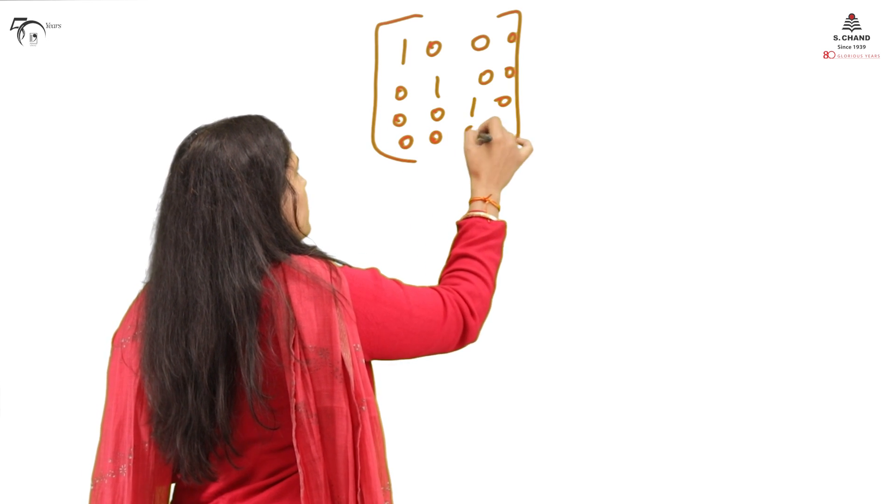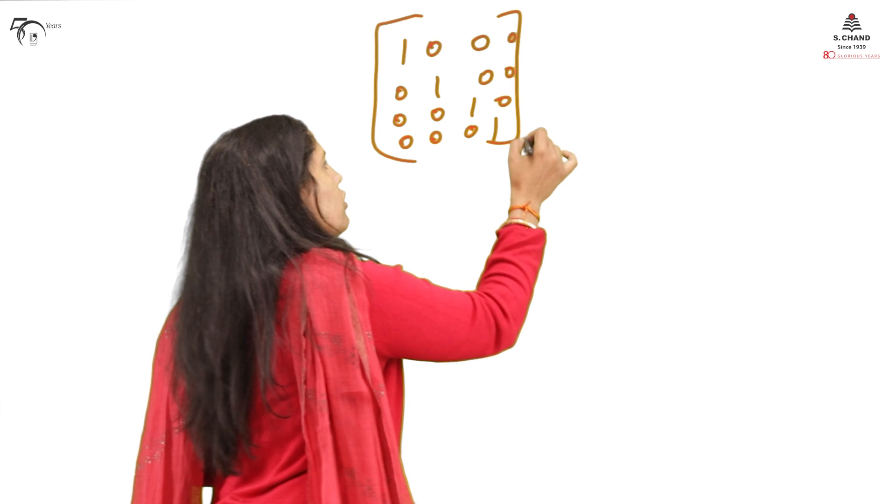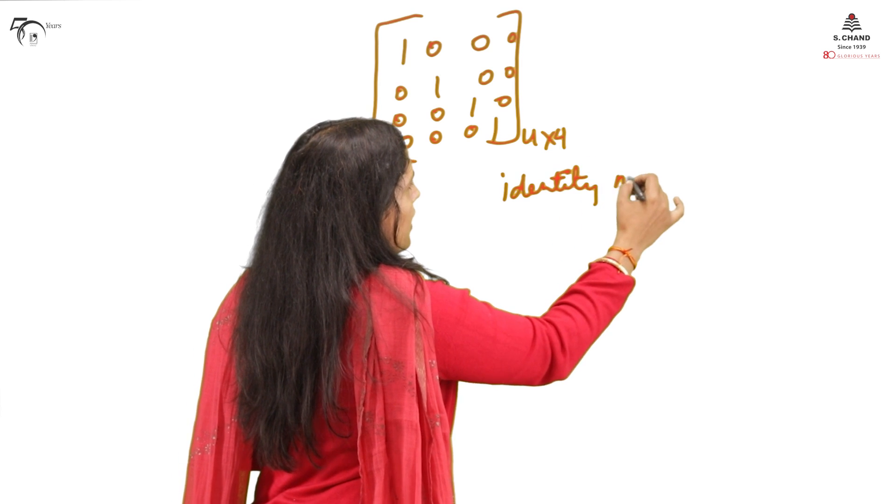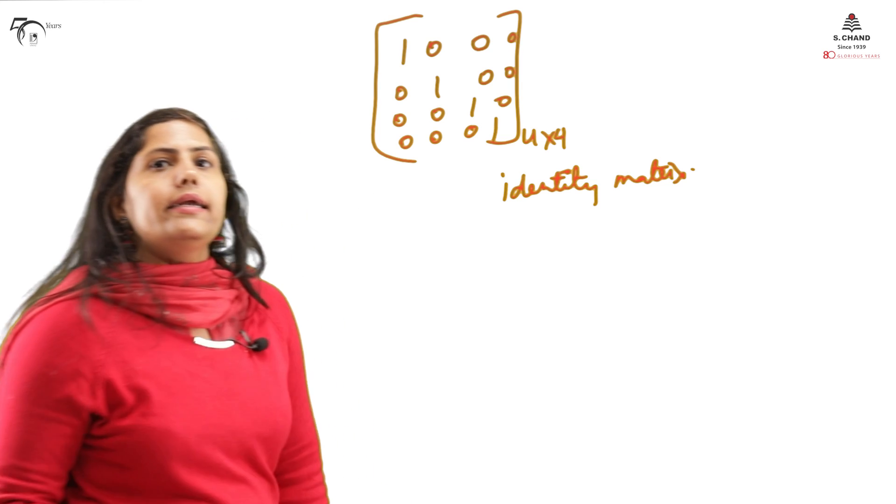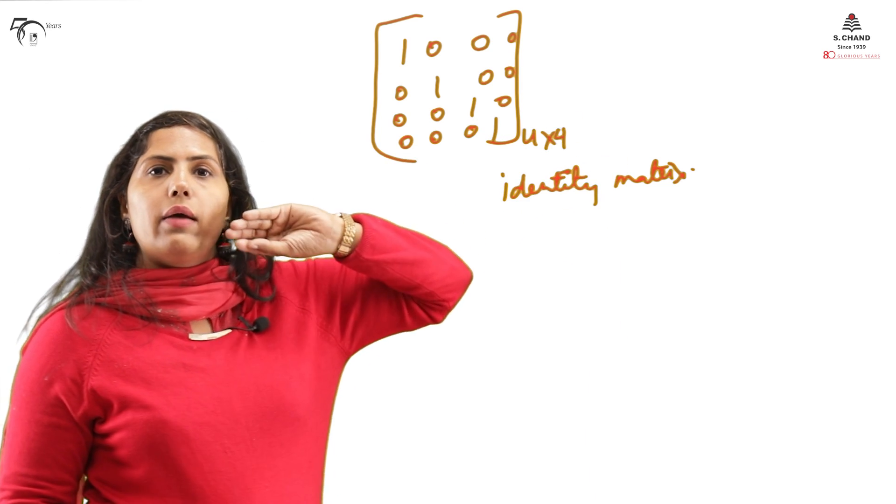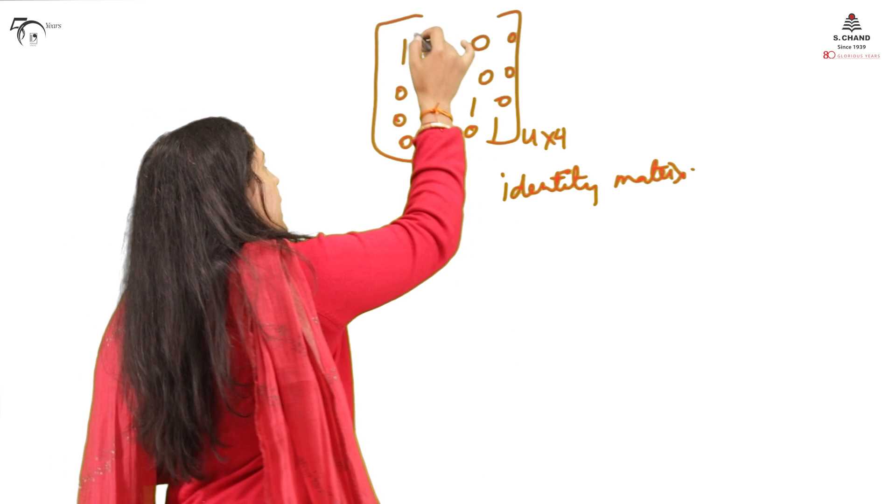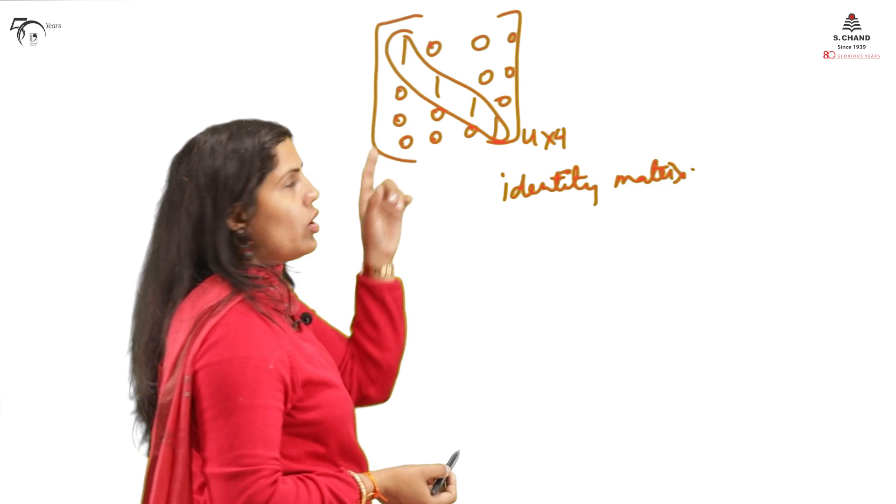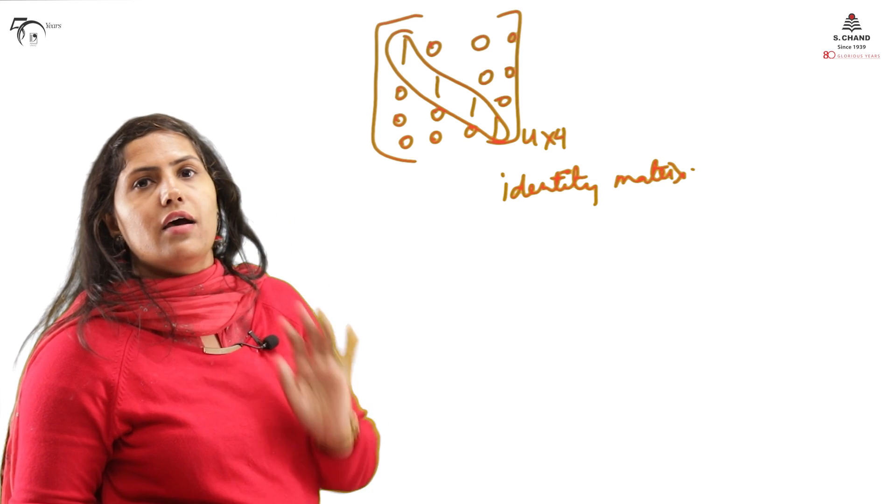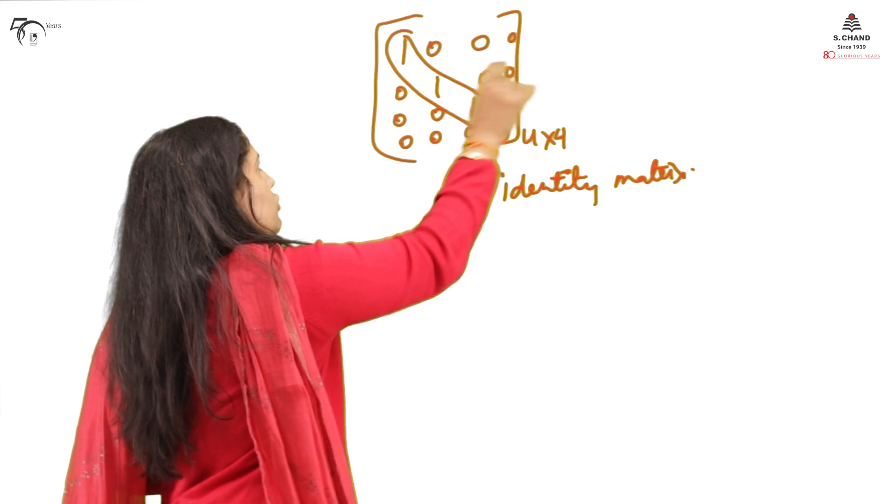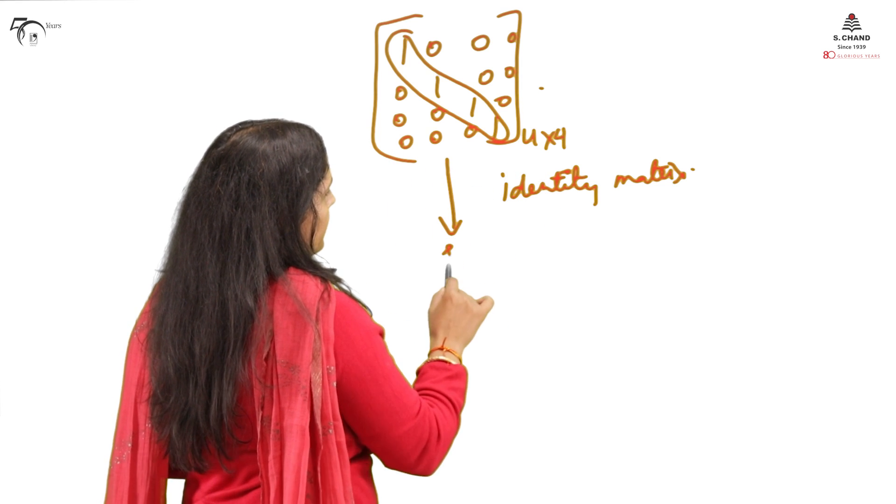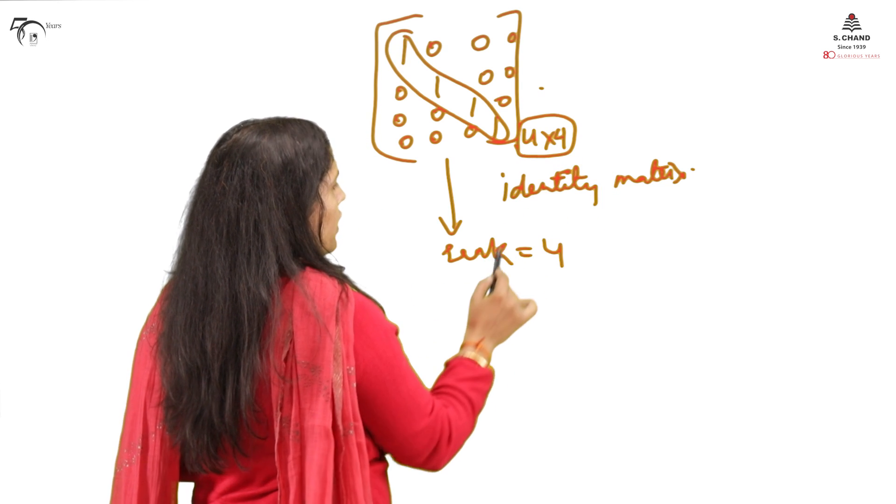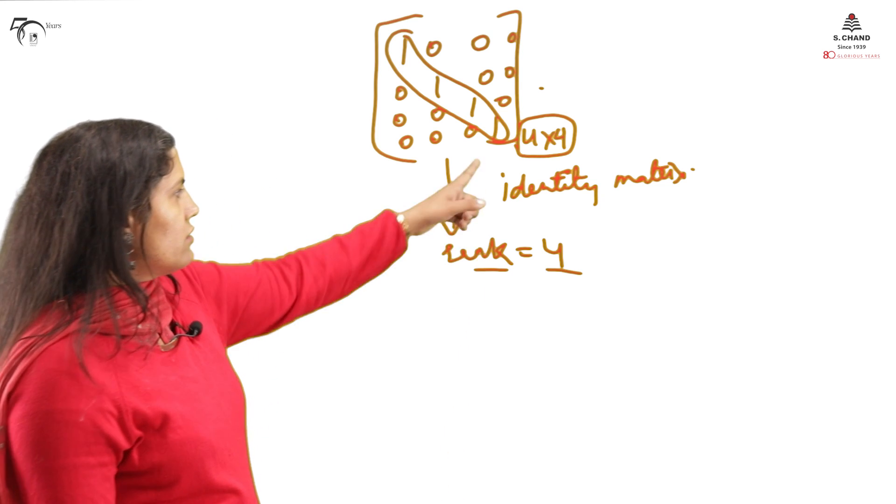One more example. Can you now identify which matrix this is? This is 4 cross 4 identity matrix. Identity matrix 4 cross 4 will have rank 4, because identity matrix already has the property - below diagonal you have all 0s. This is non-zero row, this is non-zero. So what is the rank? Rank of identity matrix is 4.